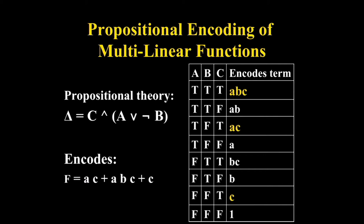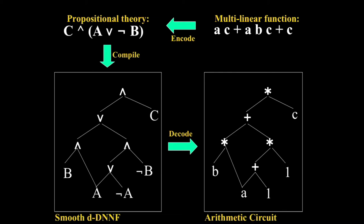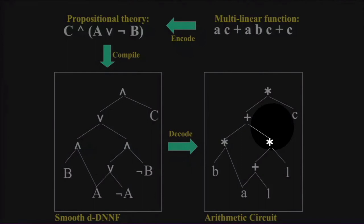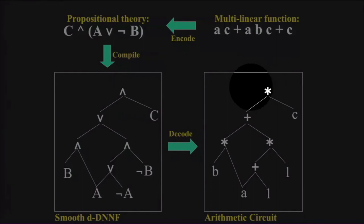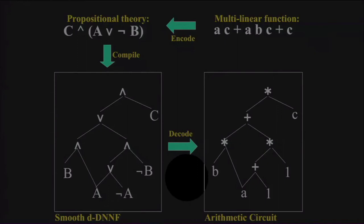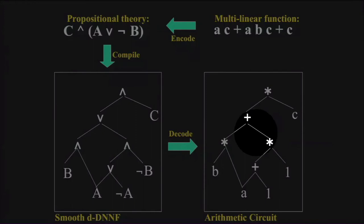Now the big picture: I have the multilinear function — in general this comes from a Bayesian network. I write out the propositional theory as a CNF. I compile it into the Boolean d-DNNF circuit. Then I decode it to get the arithmetic circuit. The decoding process is simple: AND gates become multipliers, OR gates become adders, positive literals translate to the corresponding real-valued variable, and negative literals transform into one.